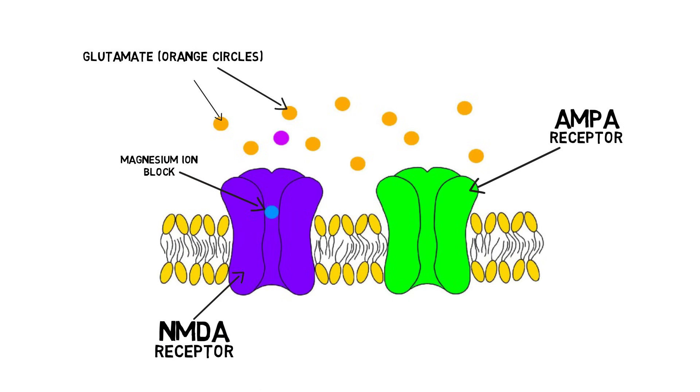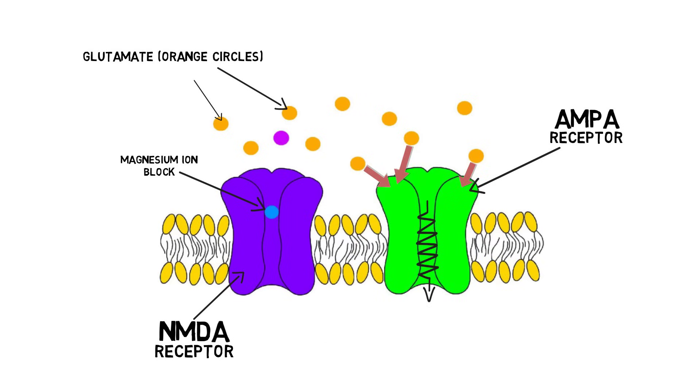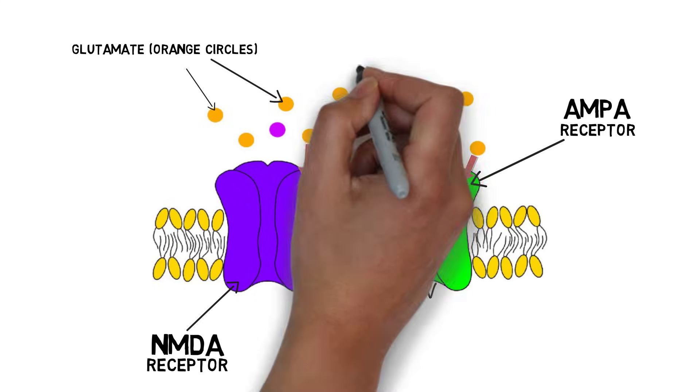If frequent action potentials cause greater stimulation of AMPA receptors, however, this will cause the postsynaptic neuron to depolarize, which eventually causes the voltage-dependent magnesium blockage of the NMDA receptor to be removed, allowing calcium ions to flow in through the NMDA receptor.